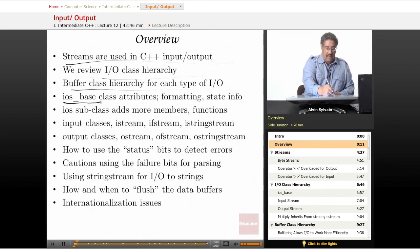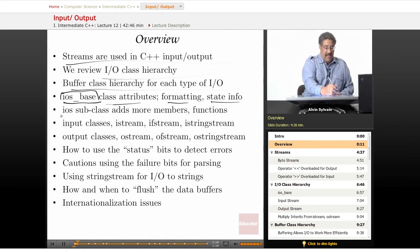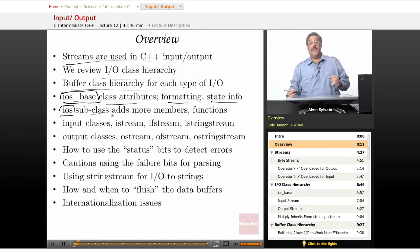Now the iOS base is the base class for all input output streams in C++, and it has class attributes, formatting methods, and state information. Then we have the iOS subclass which is derived from iOS base, and all the other input output streams are derived from iOS. So it adds some members and some functions that add a few more things you can do with input output.